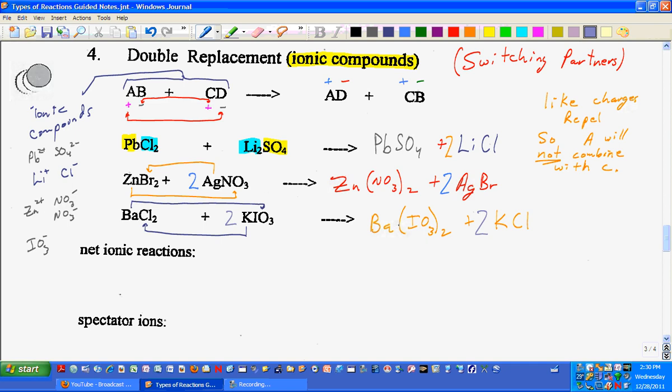These reactions don't always occur. But we don't look at the activity series to decide. The activity series is strictly for single replacement reactions. Double replacement reactions, we'll look at solubility rules. But I think we'll do that after we get back right before finals. Also, we'll take a look at net ionic reactions and spectator ions after the break when we get back right before finals.